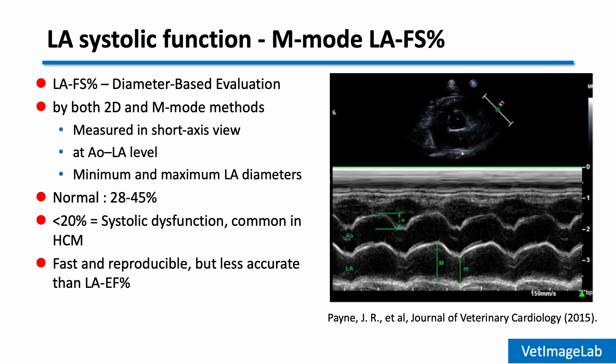We measure the maximum and minimum diameter of the left atrium during the cardiac cycle. LA fractional shortening is then calculated to reflect the systolic contractility of the atrial wall. Normal values are between 28 and 45 percent. A value less than 20 percent is considered systolic dysfunction. Cats with HCM typically show lower values due to atrial remodeling.